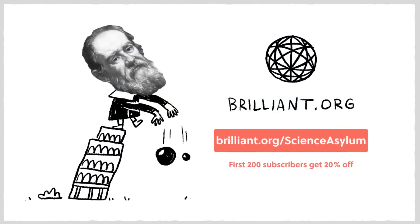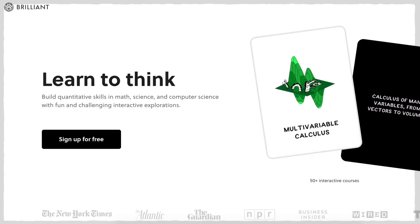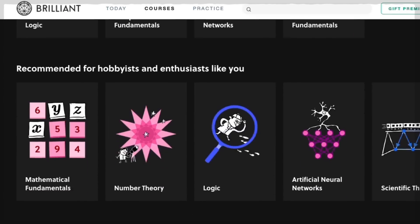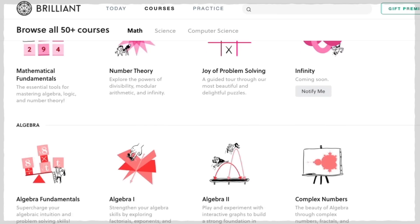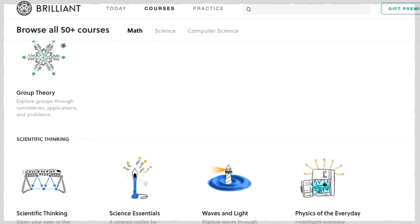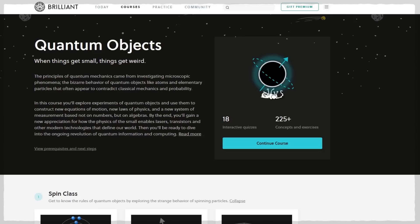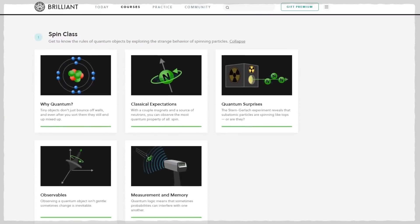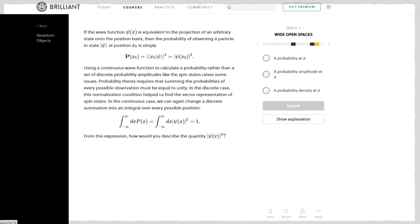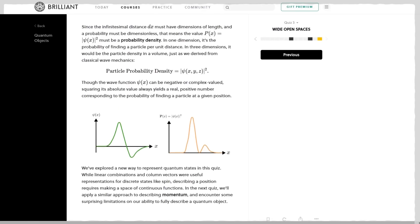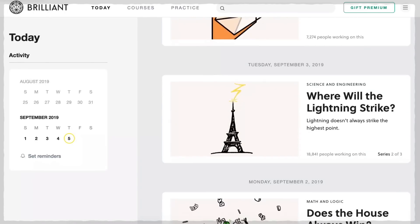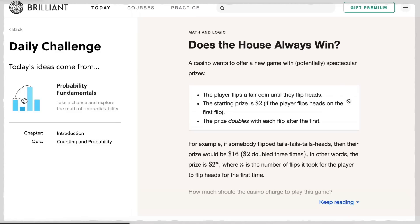Becoming great at math and science doesn't have to be dull. Brilliant is a problem-solving website and app with a hands-on approach. There are over 50 courses full of storytelling, interactive challenges, and problems to solve. If you watched this video, you'd probably like their course on quantum objects. The course covers everything from concepts to the unique mathematical notation used in quantum mechanics. They even go deeper into those graphs I spent most of this video talking about.